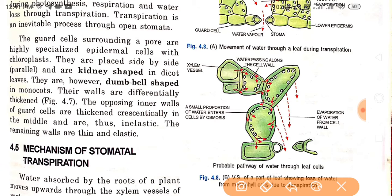The walls of guard cells are differentially thickened. The inner walls of the guard cell are thickened crescentically in the middle and are thus inelastic — they do not stretch too much. The remaining walls are thin and elastic, which is why they facilitate the opening and closing of stomata.